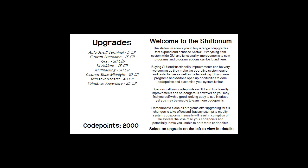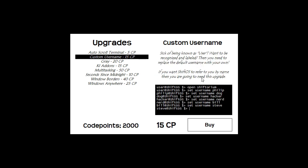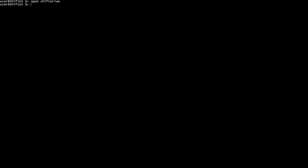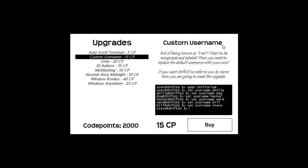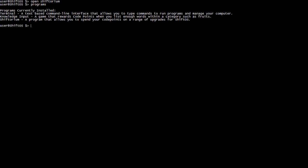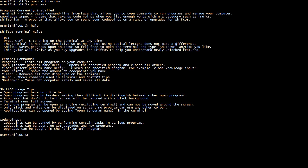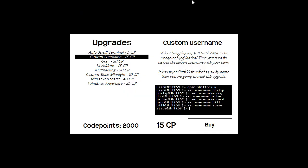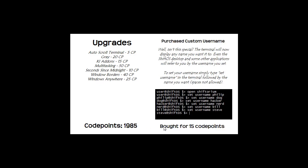I'm going to buy an upgrade — let's say custom username. It gives a description: 'Sick of being known as user? Want to be recognised and labelled?' You need to replace the default username with your own. If I press Ctrl+T I can switch between the desktop and the full-screen terminal. Typing 'programs' always shows 'user at Shift OS.' If I buy this custom username for 15 code points and click buy, it deducts my code points and confirms purchase.